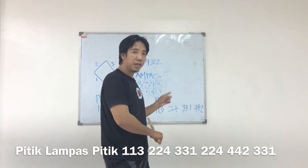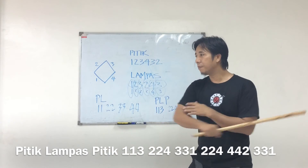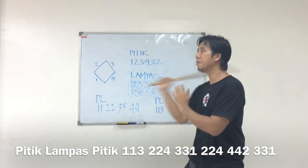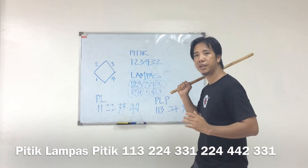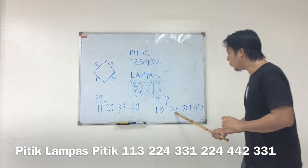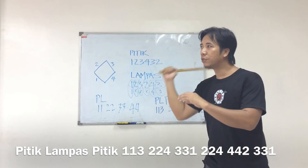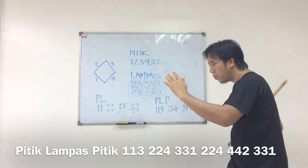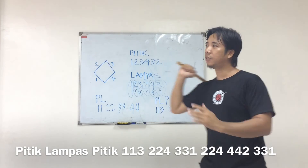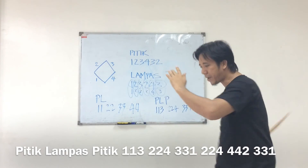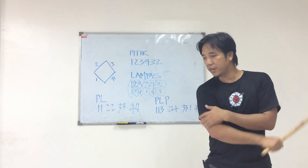Side view first — pitik lampas pitik. That's one one three. The next one would be two two four — coming from the open position, that's two two four. Then three three one, and then four four two.